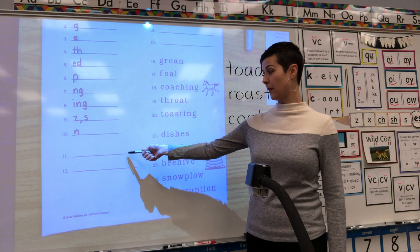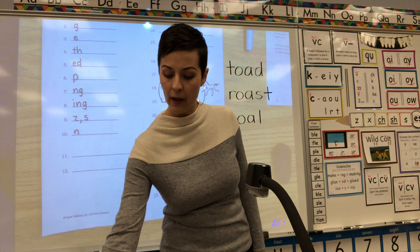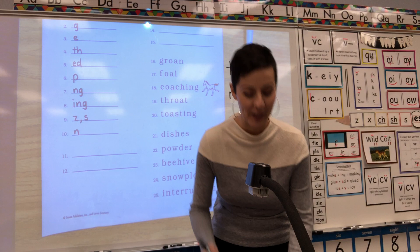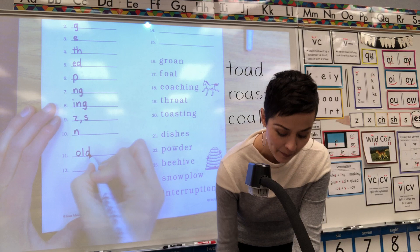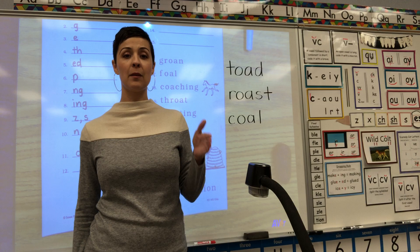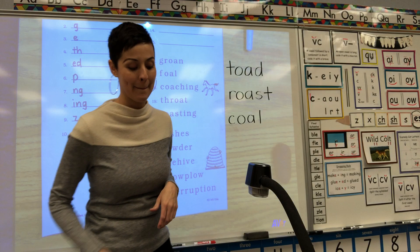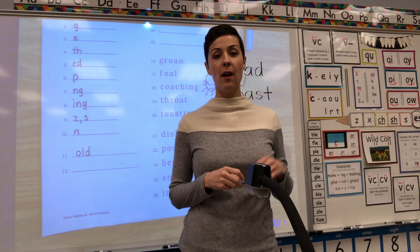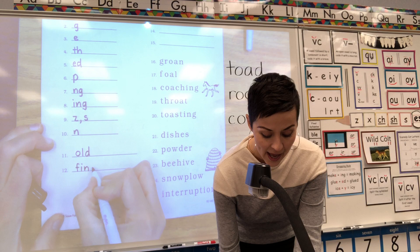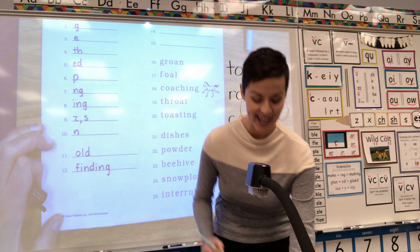Scooting down to number 11, our spelling review words. Let's review the wild cult words we learned yesterday. By number 11, spell for me the word OLD. Ready? O, L, D. Nice work. Number 12 — I'm going to give you a root word and a suffix, so get your choppers out. Tell me the root word and suffix in FINDING. Root word is FIND, suffix is ING. Spell it starting F. Ready? F-I-N-D-ING. Nice work.